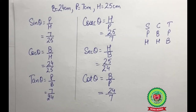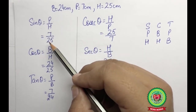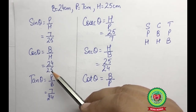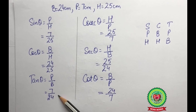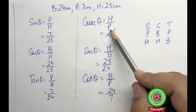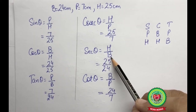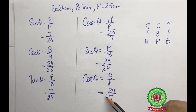Now we have all the required values to find the six trig ratios. Sin theta = P/H = 7/25. Cos theta = B/H = 24/25. Tan theta = P/B = 7/24. Cosecant theta = H/P = 25/7. Secant theta = H/B = 25/24. Cotangent theta = B/P = 24/7.